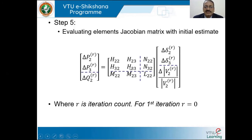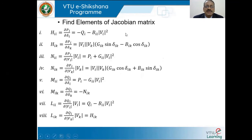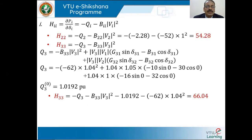The Jacobian matrix elements are calculated using equations 1 through 8 derived in earlier lectures. H22 = Q2 − B22·V2², and substituting Q2, B22, and V2 gives H22 = 54.28. H33 requires Q3⁰ = 1.0192 to be calculated first; substituting into the expression gives H33 = 66.04.